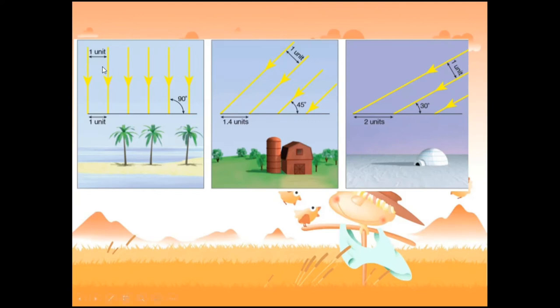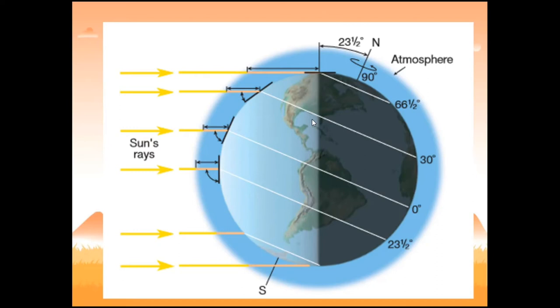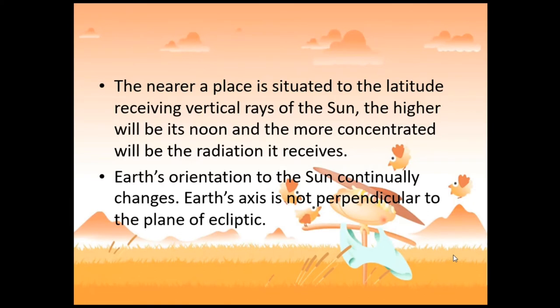At directly overhead, that is called one unit — the distance radiation must travel. This distance changes as the angle changes. The tilting of the earth also has an effect on the heating of different parts of the earth. The closer a place is to the latitude receiving vertical rays of the sun, the higher its noon sun angle and the more concentrated the radiation it receives. Earth's axis is not perpendicular to the plane of the ecliptic but is tilted at 23.5 degrees.